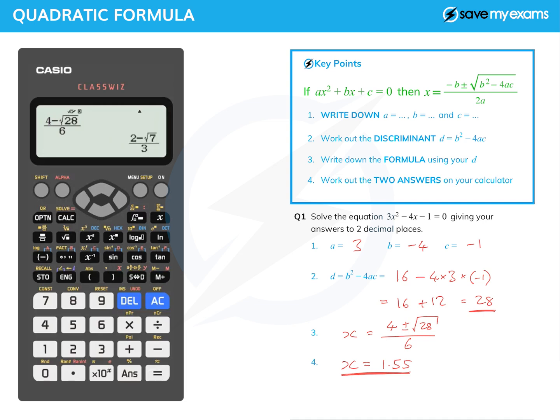And that now will give me the other answer. Again in surd form, S to D button, and I get x equals minus 0, well it's 2, 1, 5. 5 is bigger than or equal to 5, and so we round up the second decimal place. Please do use this method because if you put all those minus signs into a calculator, it's incredibly easy to make a mistake.